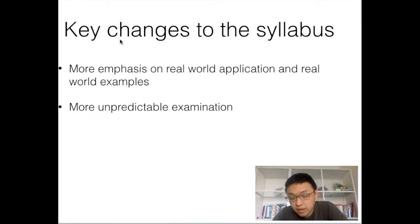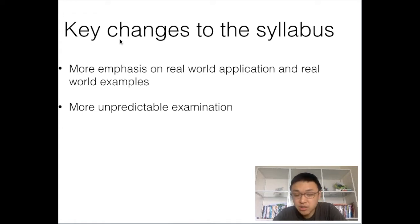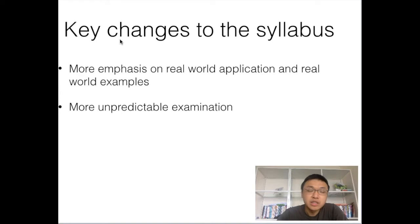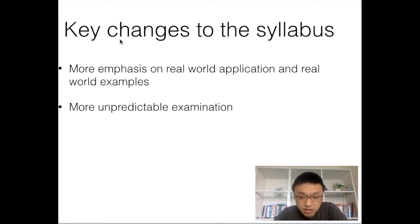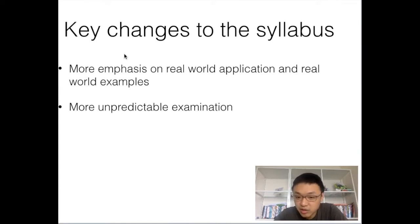So what is the difference between the old syllabus and the new syllabus? I think there are two main things. The first is that there is more emphasis on real-world application. In the exam paper, you'll face more data analysis and data response questions. There are more questions that require you to use information from the real world to answer your questions — you'll get more case studies. And even in essay questions, you need to have real-world examples. This is stated very clearly in the new IB Economics syllabus.